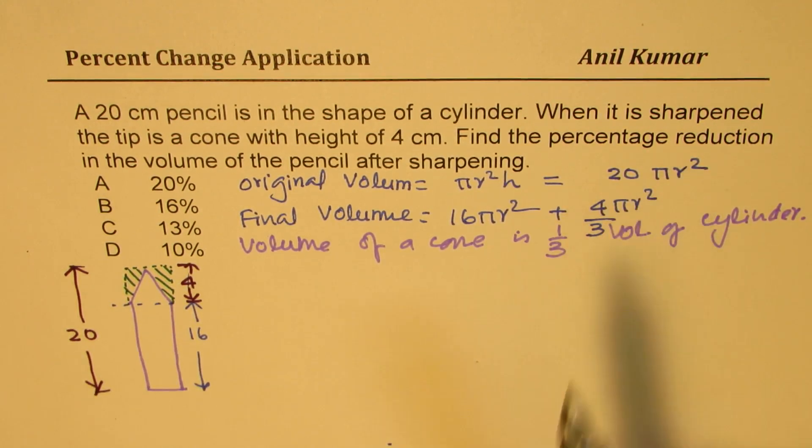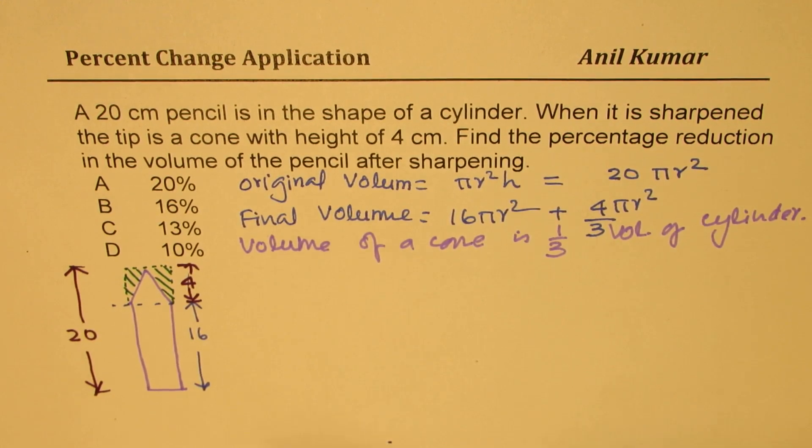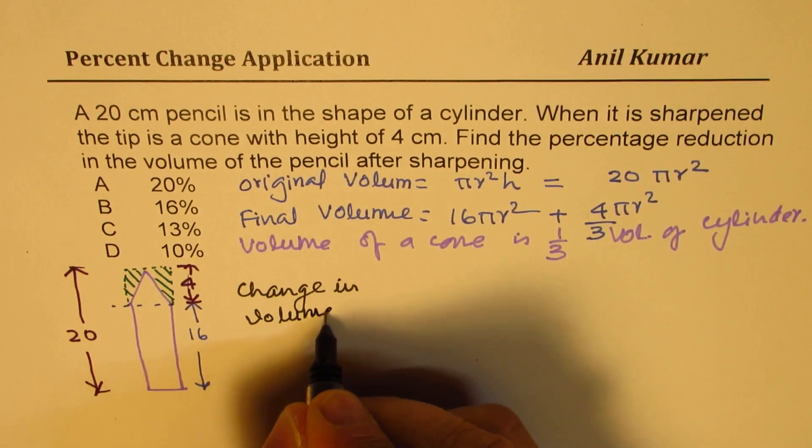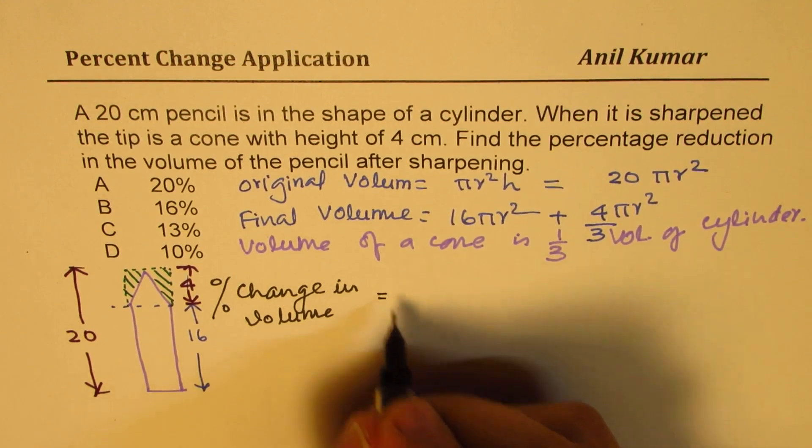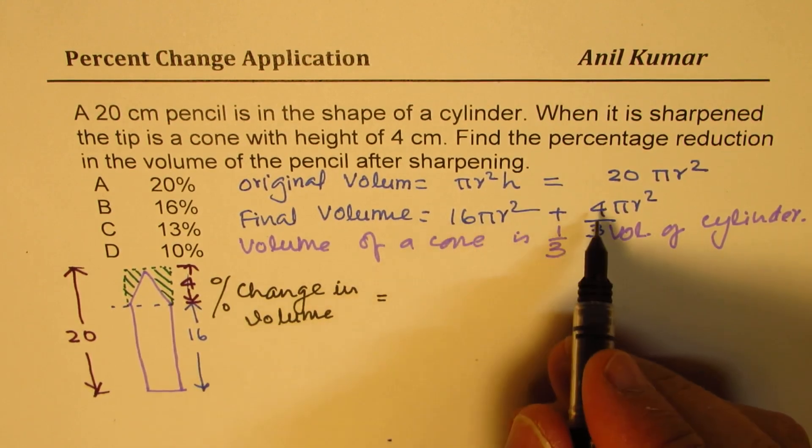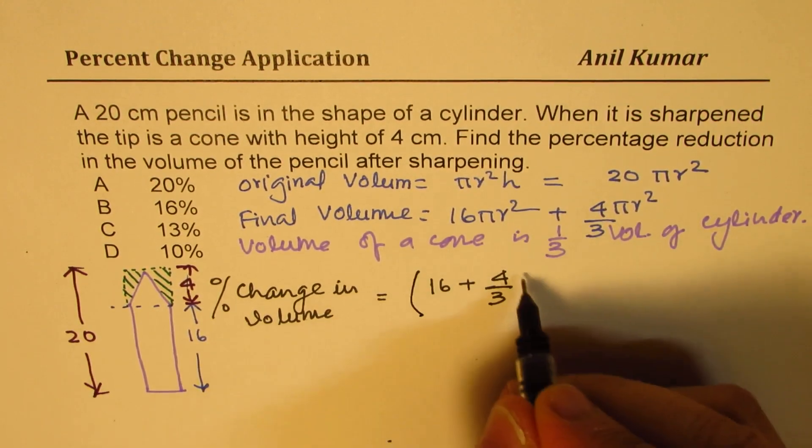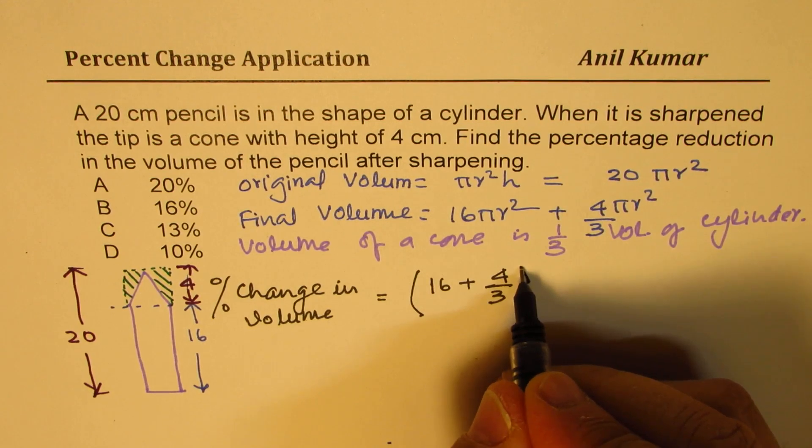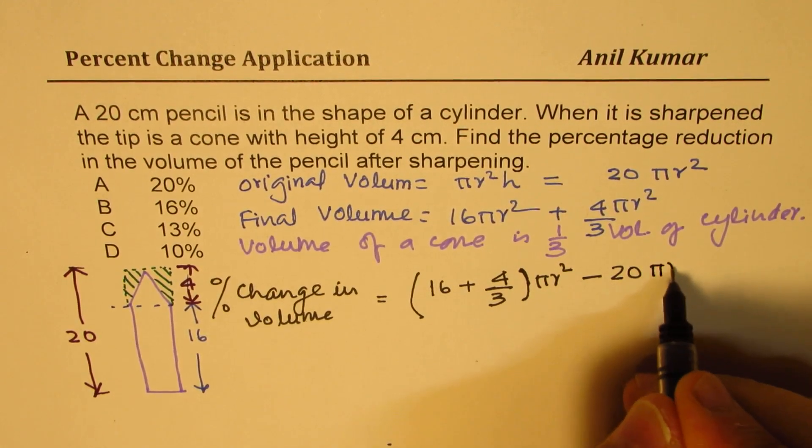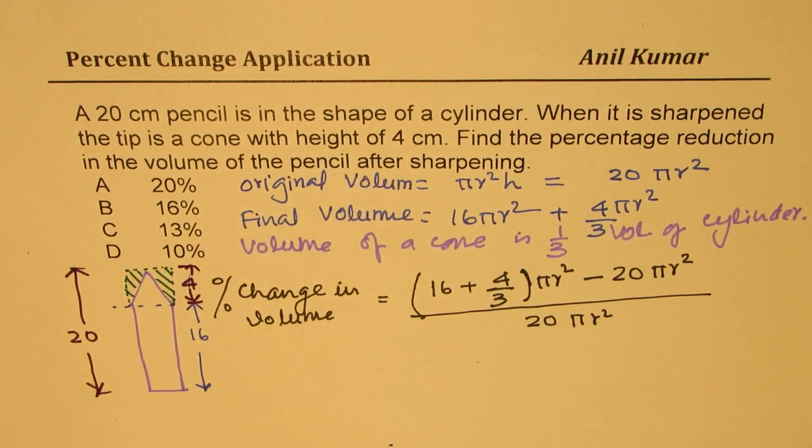Now πr² will all cancel, so you need not even consider them. So the change in volume is what we need to figure out. Let's work it out. So percent change, multiply by 100. We can write final, which is 16 plus 4/3, minus the original 20. You need not write πr² when you are doing this question. Divide by 20. All πr² will cancel.